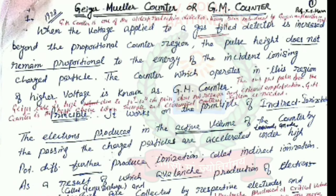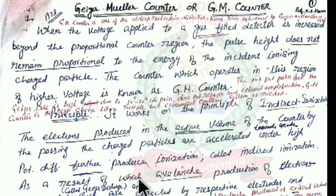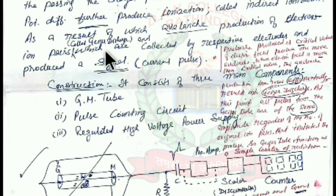The GM counter works on the principle of indirect ionization. Indirect ionization means the electrons produced in the active volume of the counter by a passing charged particle are accelerated under a high potential difference to produce further ionization, termed as secondary and tertiary ionization. The resultant ionization is called indirect ionization, which leads to avalanche production of electron-ion pairs, resulting in a Geiger discharge.